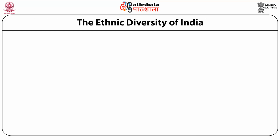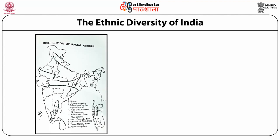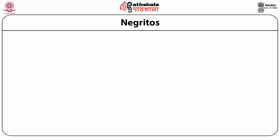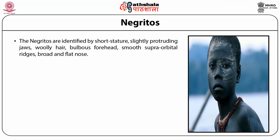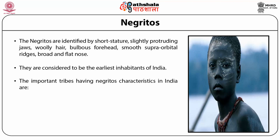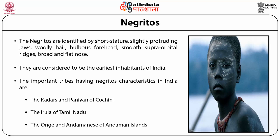You can see the map showing the distribution of racial groups provided by Vijay Sohai and Pradeep Singh, published in Indian Anthropology 1998, where Dravidian population, Northeast population, Negrito population and Mediterranean distribution are shown. Negritos are identified by short stature, slightly protruding jaws, peppercorn hair, bulbous forehead, smooth supra-orbital ridges and broad and flat nose. They are considered to be the earliest inhabitants of India. The important tribes having Negrito characteristics include the Kadars and Panians of Cochin, the Irula of Tamil Nadu, and the Onge and Andamanese of Andaman Islands.